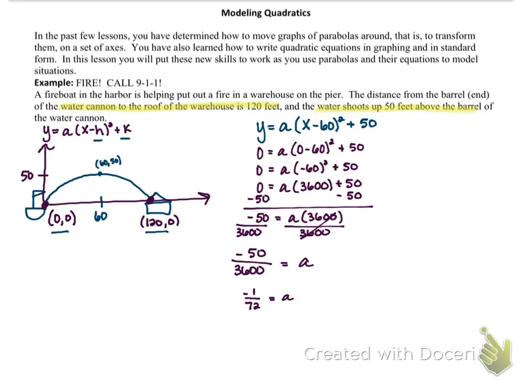Now that we have identified the vertex, so the h and k values, we have also identified the a value. We can go ahead and write the final form of the quadratic, which will be y equals negative 1 over 72 times (x minus 60) squared plus 50.